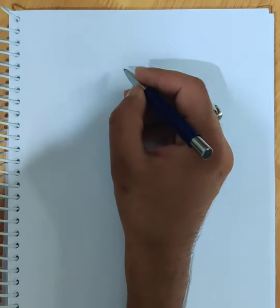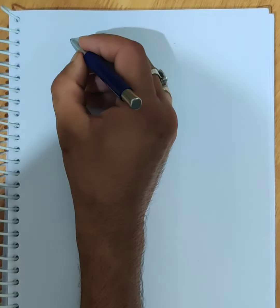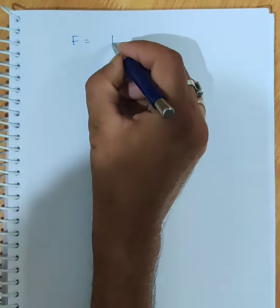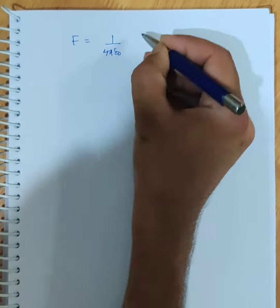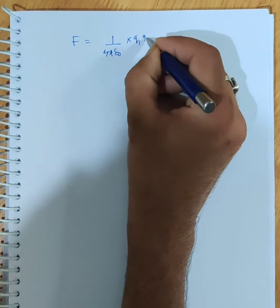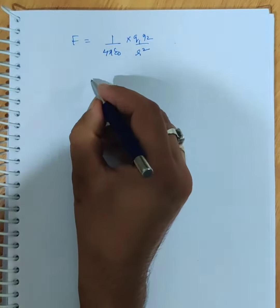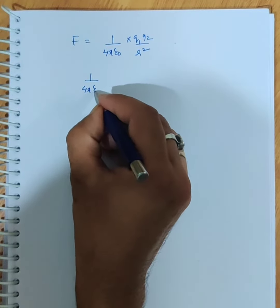Let us understand what epsilon is. We have force equals one upon four pi epsilon not into q1 q2 upon r square. And if we see that one upon four pi epsilon not, we can write it as k, which is nine times ten to the power nine for air.